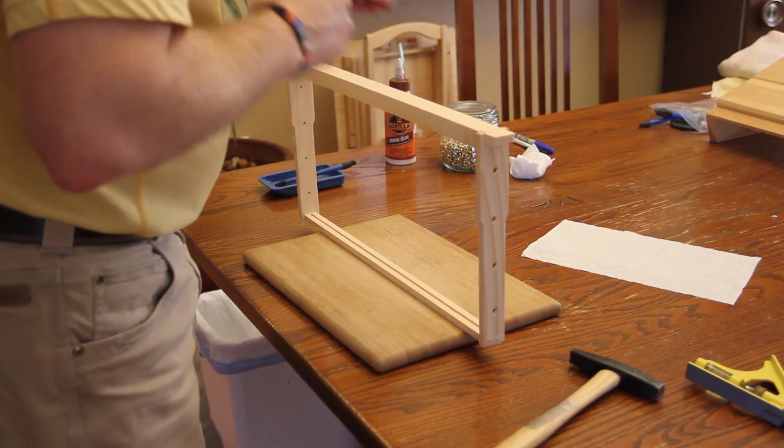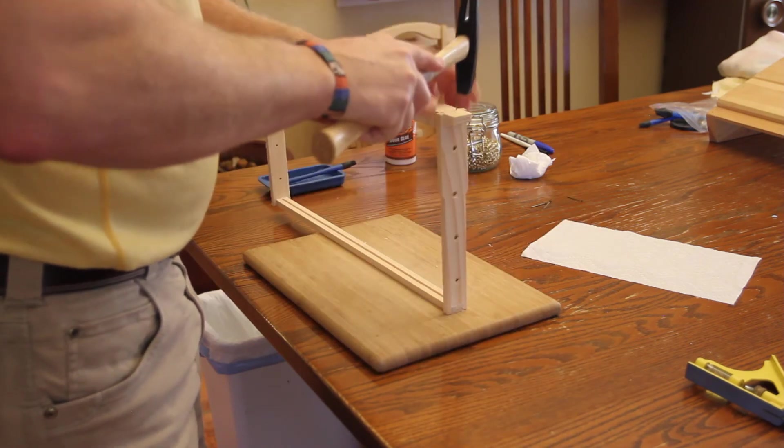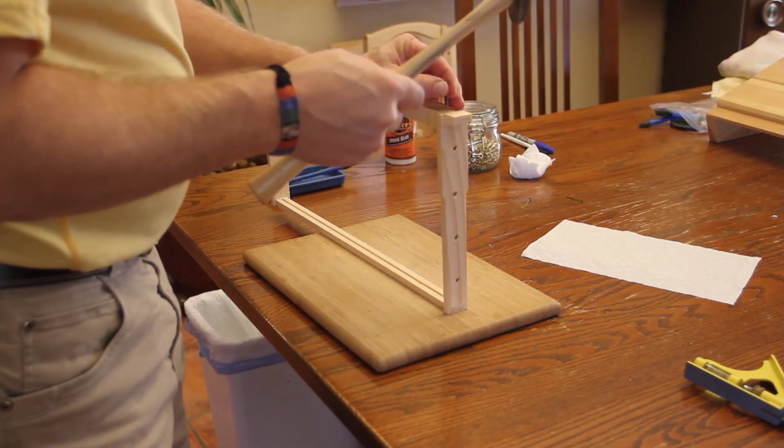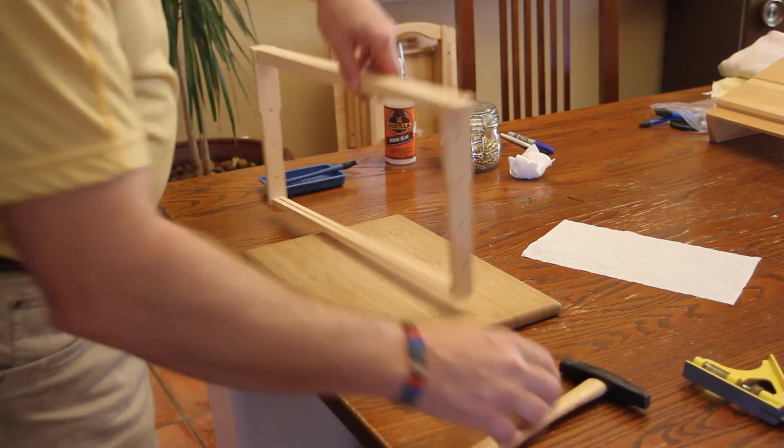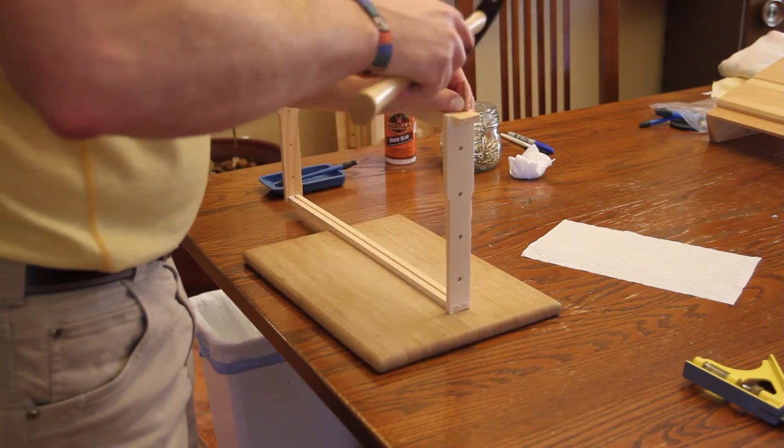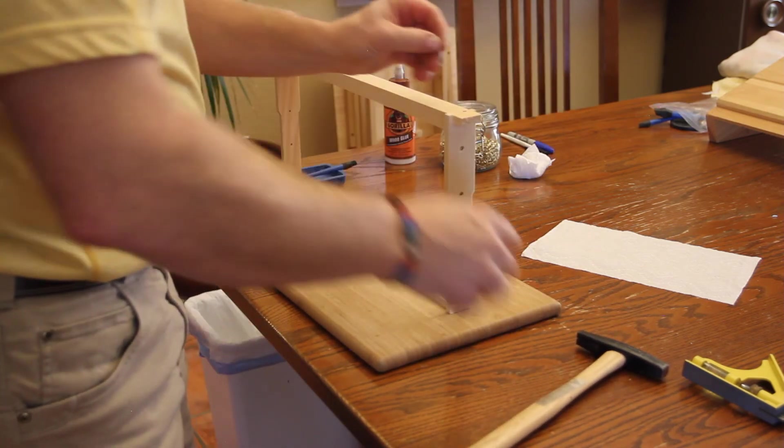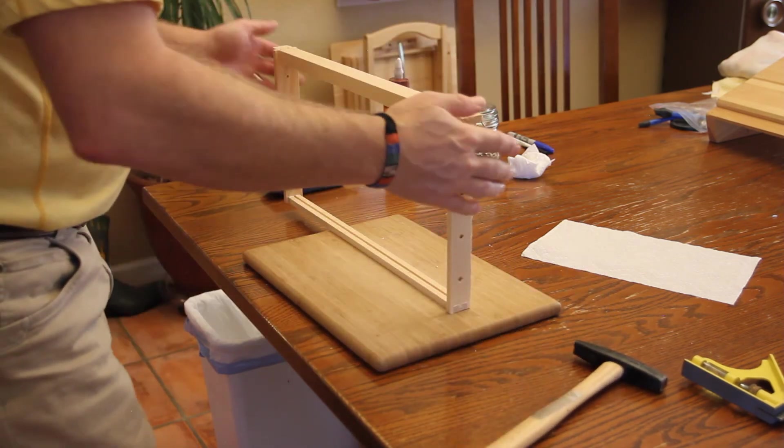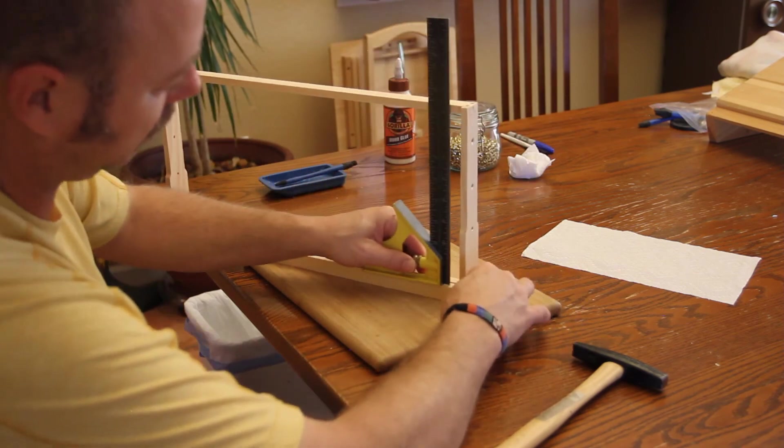Again, check it for any twisting. This one's not twisted at all—it's perfect—so sink your nails. You've got to get those nails perfectly straight or you'll get them coming out on one side or the other of that end bar. Okay, so there's the frame completely done. Let's check this.